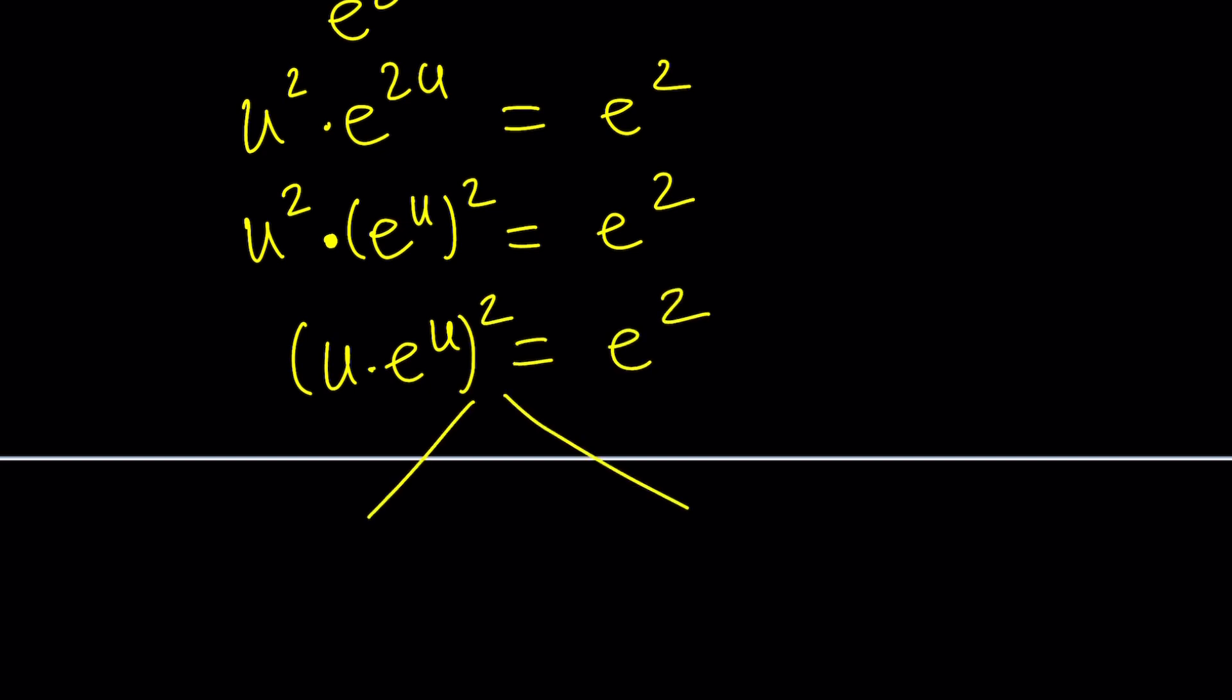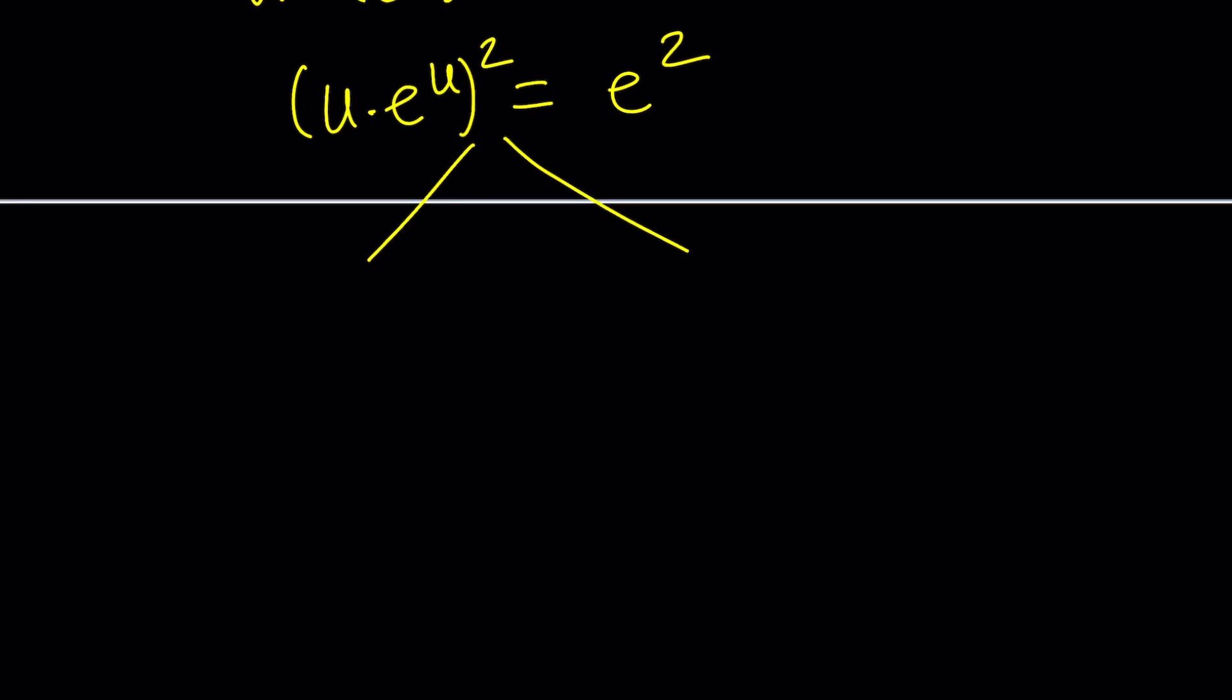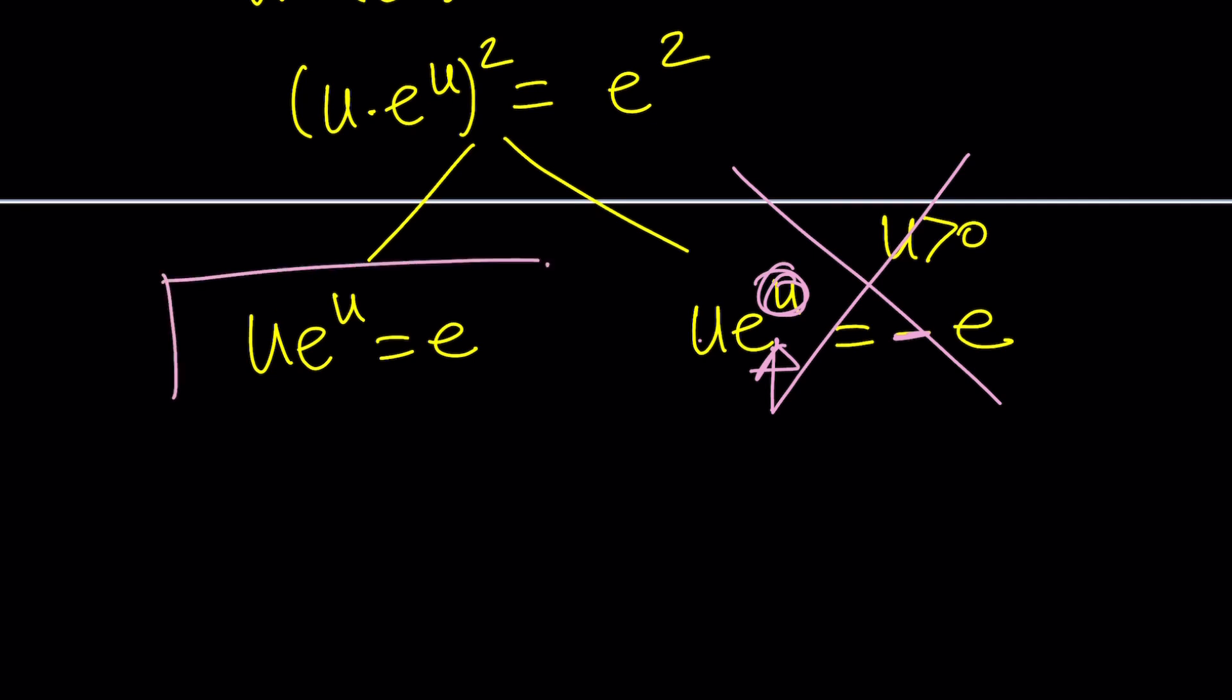Now this has two solutions. You know that. If a squared equals b squared from difference of two squares you know that a equals b or a equals negative b. This means u e to the u is equal to e or u e to the u is equal to negative e. Didn't we just say that u is positive? Yes we did. So this won't work. Think about it. u, a positive quantity times e to the power of positive quantity which is always positive by the way regardless of the sign of u will never be negative because we know that e is positive. Hopefully. So this is the only solution.